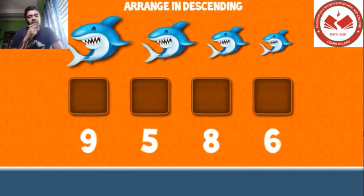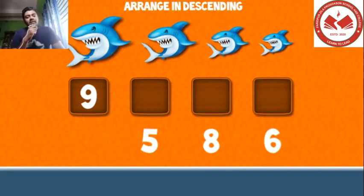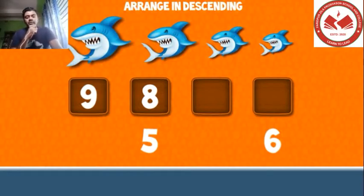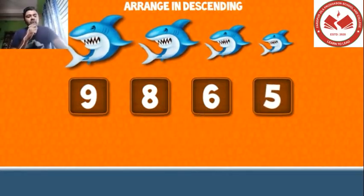Let's try to complete another series. In this series we have to arrange numbers from greater to smaller. So obviously we will put 5 in the last box to complete the series. This is called arrangement of numbers from greater to smaller: 9, 8, 6, 5.